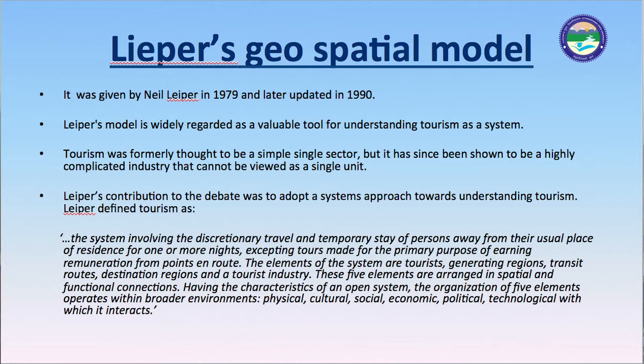Leiper defined tourism as the system involving the discretionary travel and temporary stay of persons away from their usual place of residence for one or more nights. The elements of the system are: tourist generating regions, transit route region, destination region, and the tourist industry. These five elements are arranged in spatial and functional connections, having the characteristics of an open system.